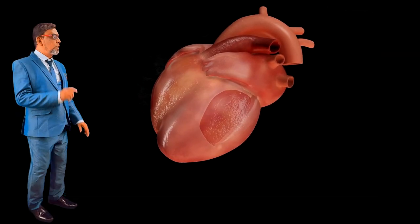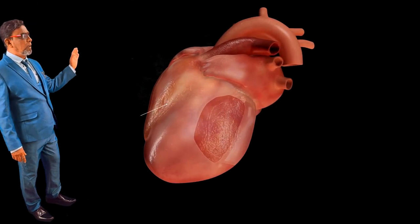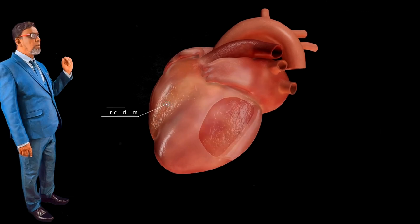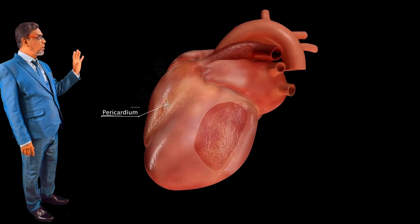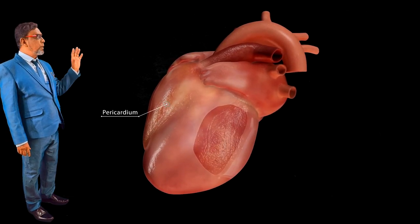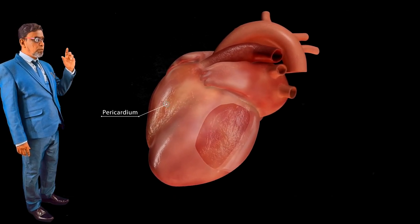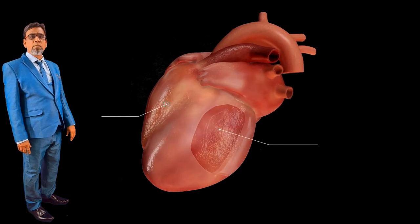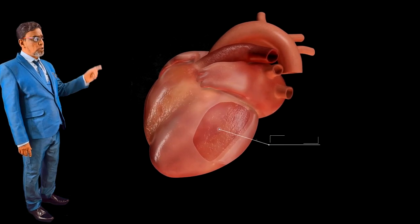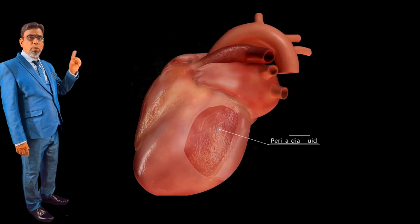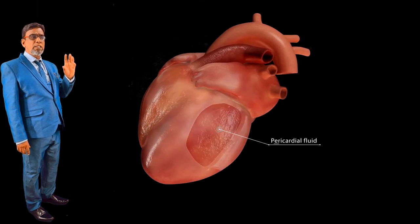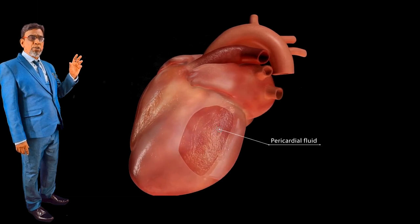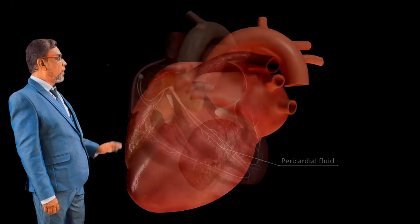The heart is covered by a membrane — a double wall membrane called the pericardium. This pericardium has a fluid called pericardial fluid. It has a double wall membrane and a fluid, which gives protection to the heart.